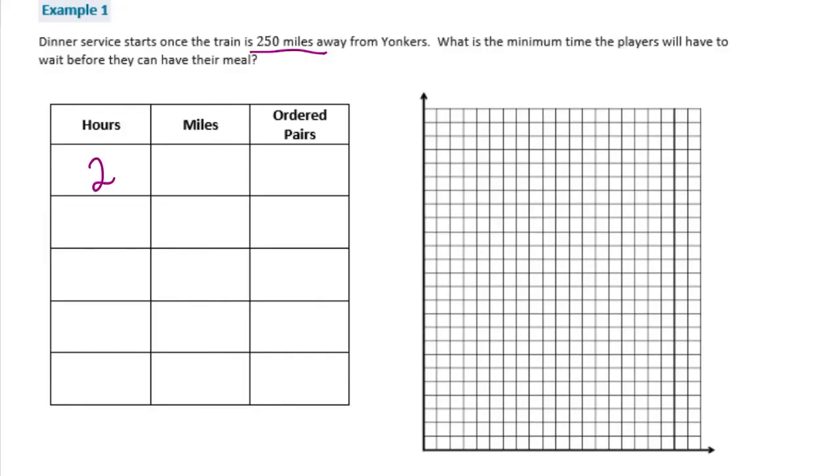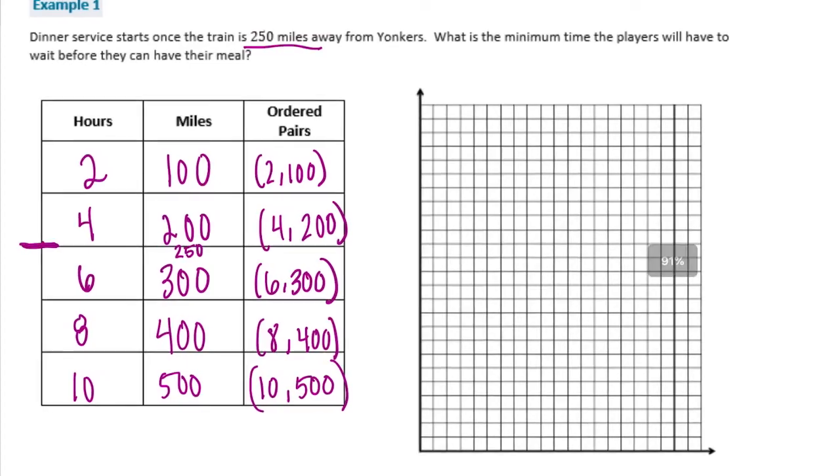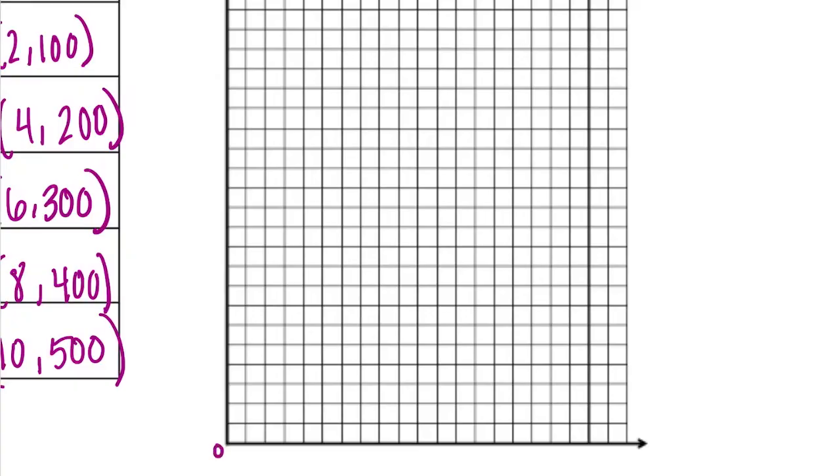We know that two hours is 100 miles. If we were going to plot these, our ordered pair would be (2, 100). Four hours is 200 miles, so that ordered pair would be (4, 200). Six hours is 300 miles, (6, 300). Our point when they get to eat is going to be right in between here because it's at 250 miles, so we'll figure that out once we get to the chart. But I'm going to finish filling this out, so eight hours is 400 miles and 10 hours is 500 miles.